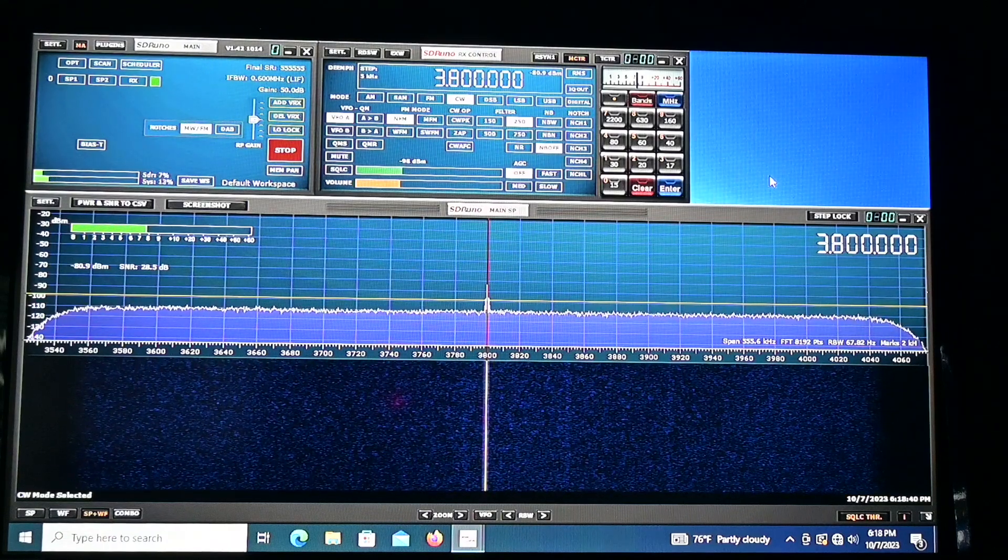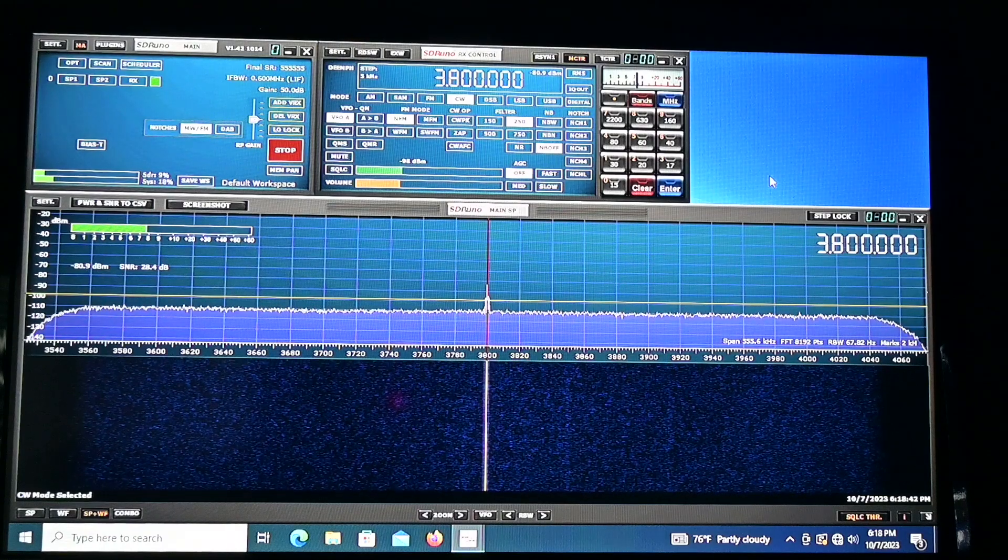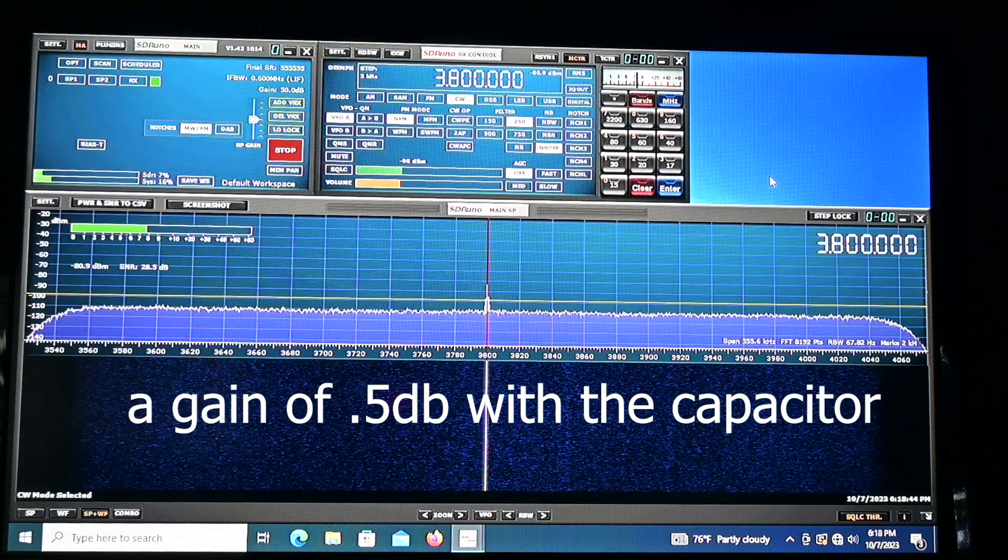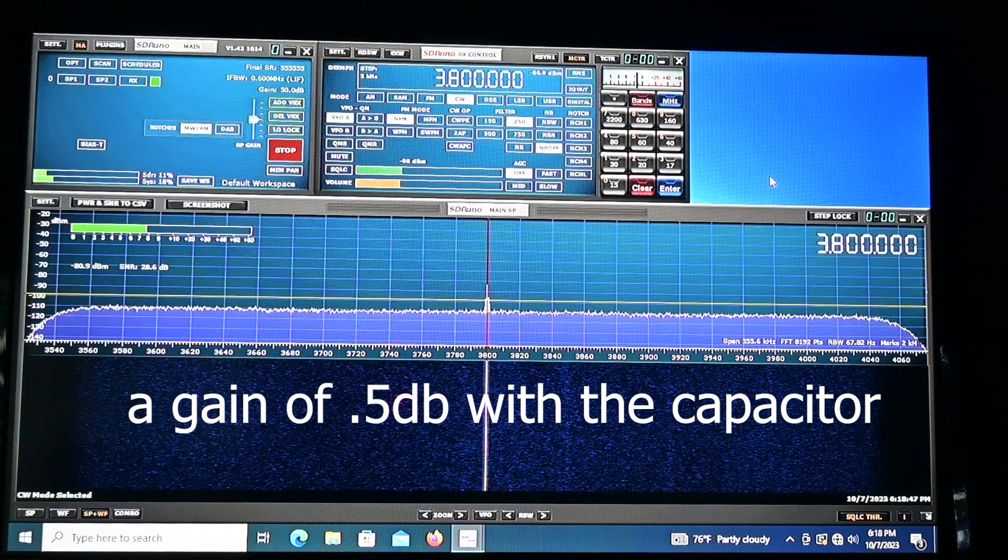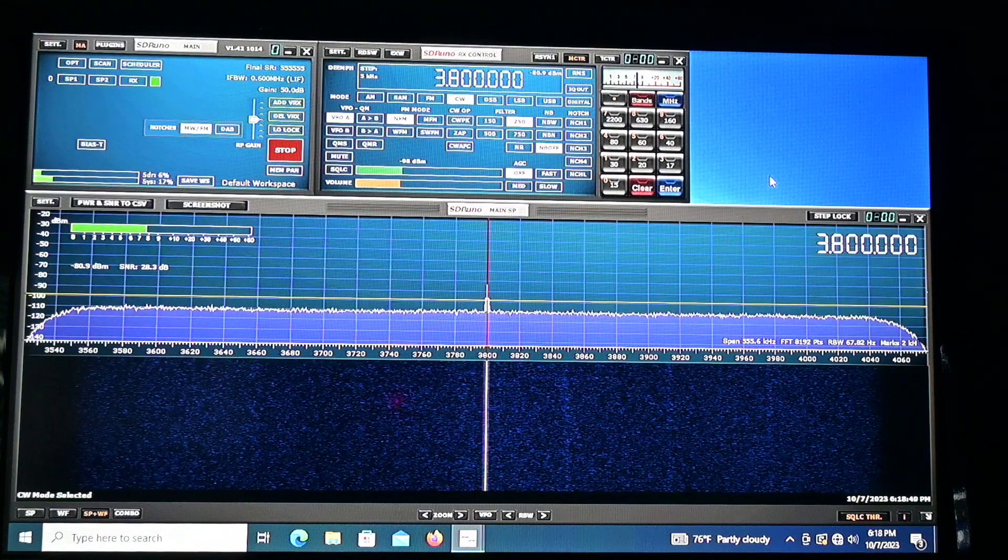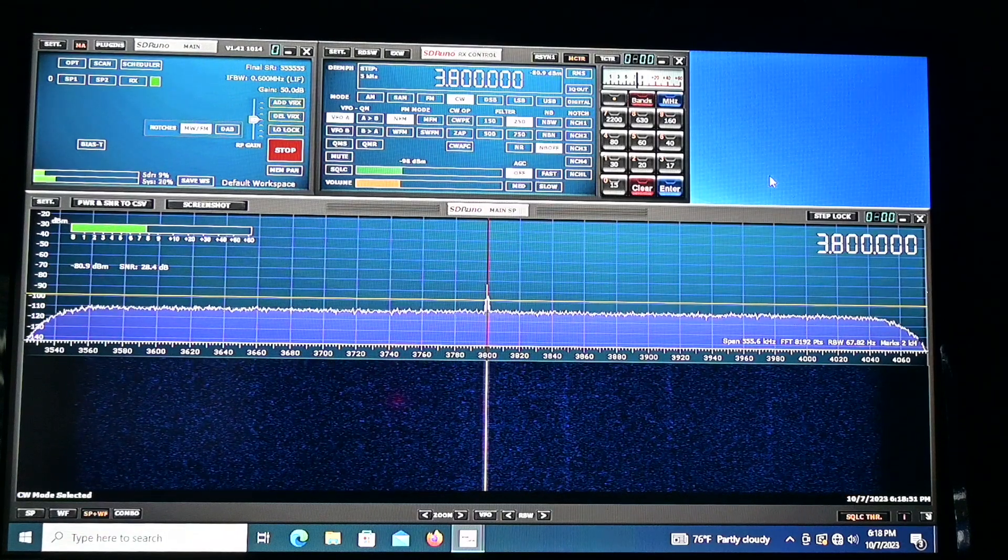And the received signal is minus 80.9 decibel milliwatts. Now one thing for sure is it was much easier to achieve a match with the manual antenna tuner with the device in line than it was leaving it out of line.